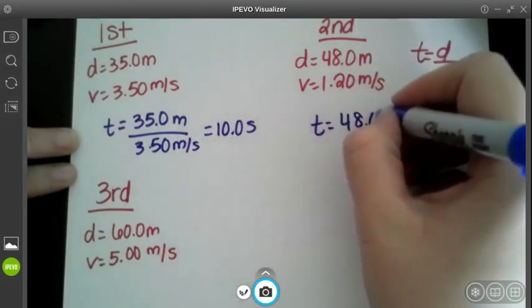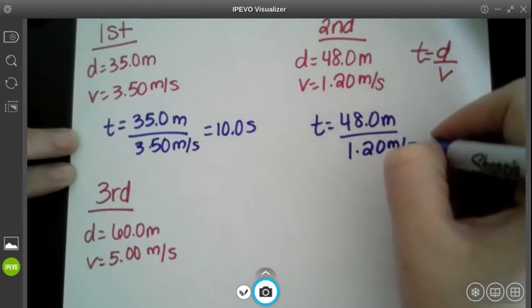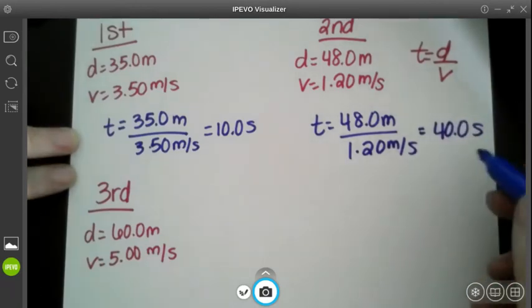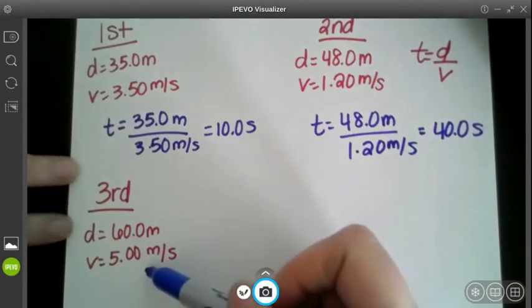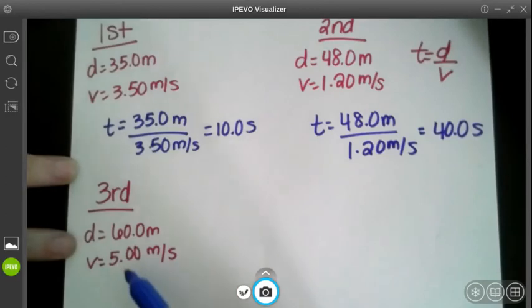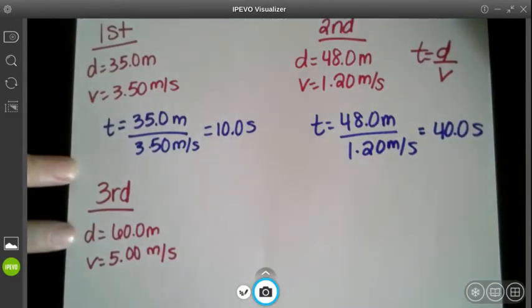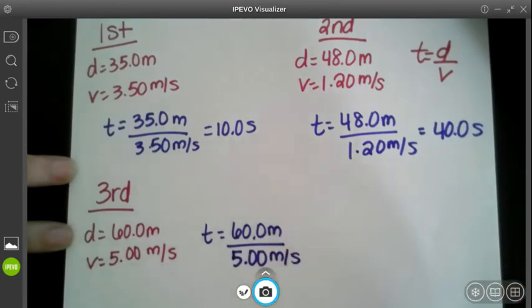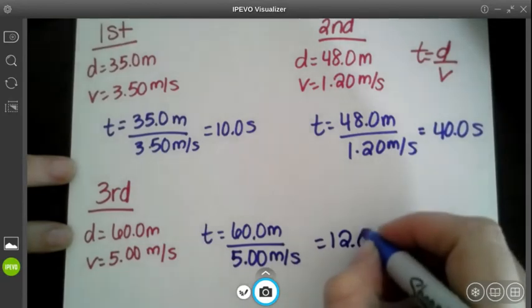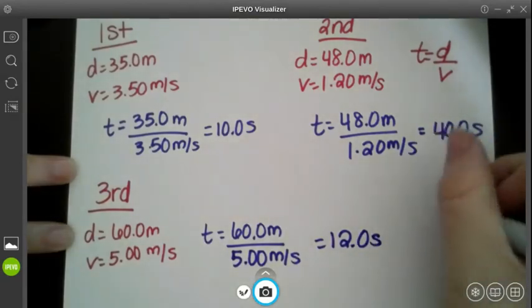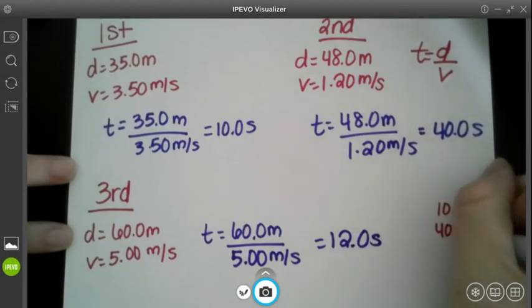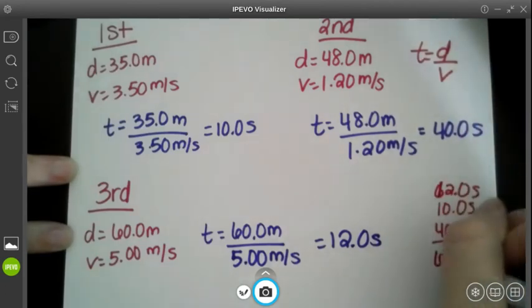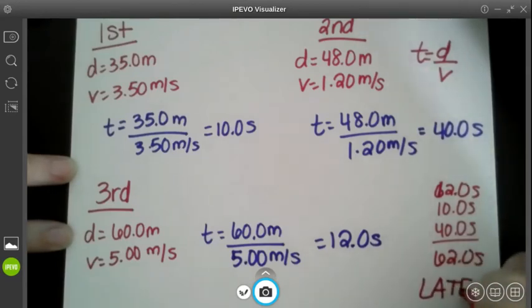Hallway number two, she goes 48 meters, but is going slowly. So it's going to be 40 seconds. So she has 50 seconds left. So we need to make sure she only had a minute. So this problem needs to be fewer than 10 seconds in order for her to not get a detention. So t equals 60 meters at 5 meters per second. And that is actually 12 seconds. So if we add these together, 10 seconds, 40 seconds, and 12 seconds, she actually gets 62 seconds, which means she is late and she gets a detention.